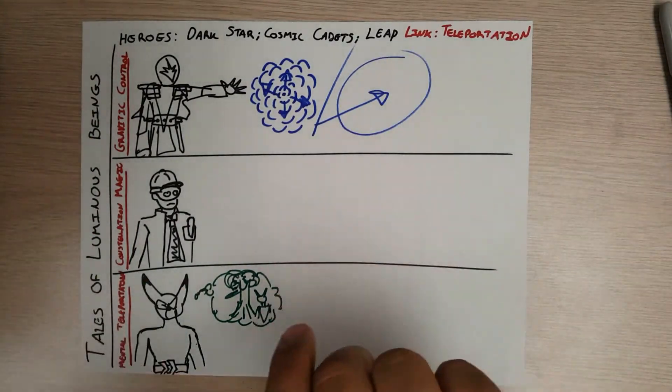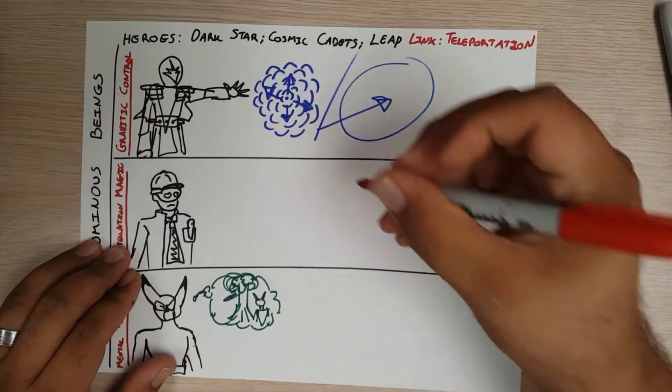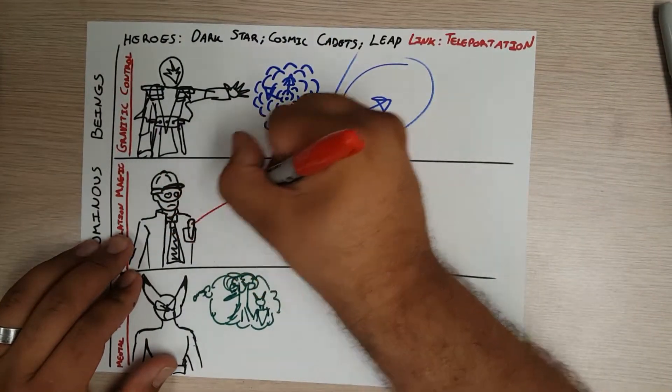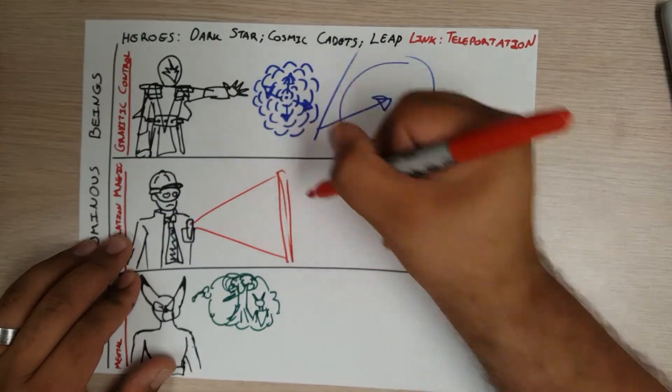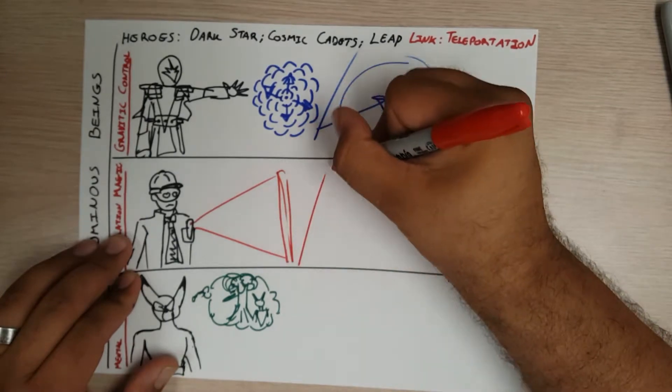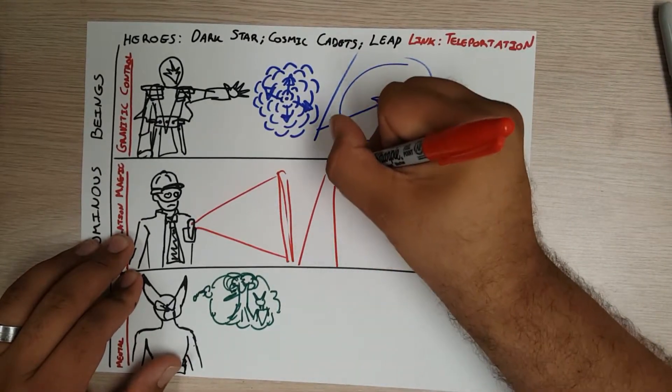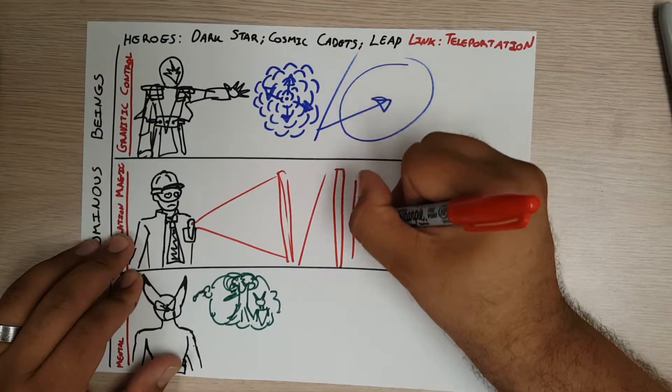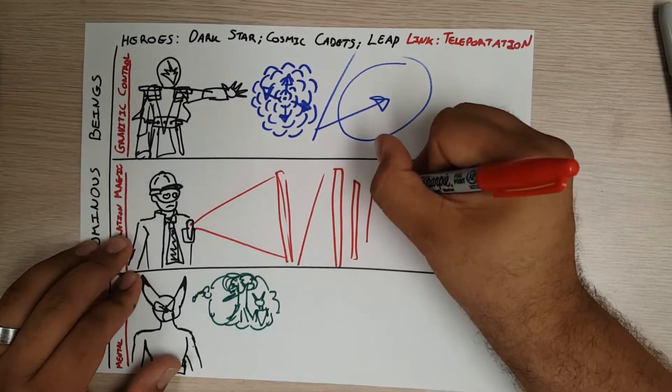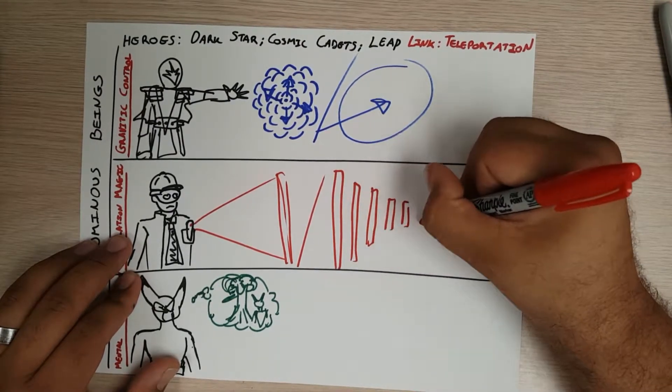For the Cosmic Cadets, I figured they have these pen lights and it would be really cool for their pen lights to shine and create a distortion - a funnel. The light shines and then it shuts off, and from that is created a tunnel or funnel.